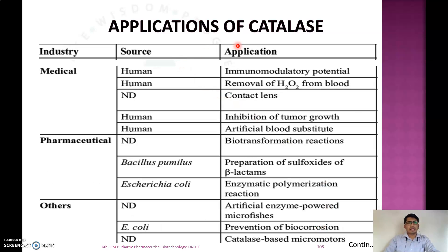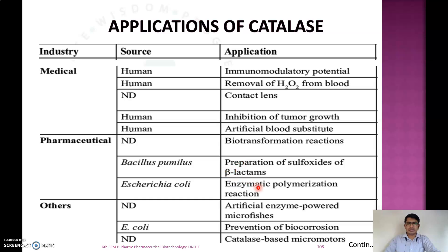In medical applications, catalase from human sources is used for immunomodulatory potential, removal of hydrogen peroxide from blood, cleaning of contact lenses, inhibition of tumor growth, and as an artificial blood substitute. For pharmaceutical applications, catalase from Bacillus pumilus is used for preparation of sulfoxides of beta-lactamase, enzymatic polymerization reactions, and biotransformation reactions.